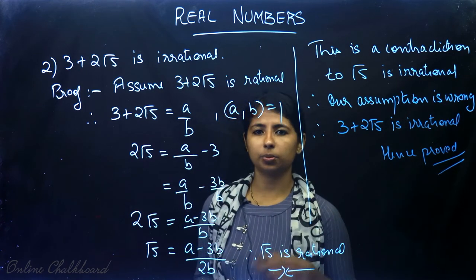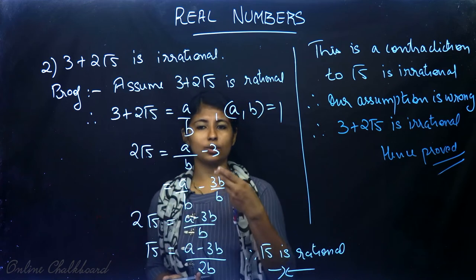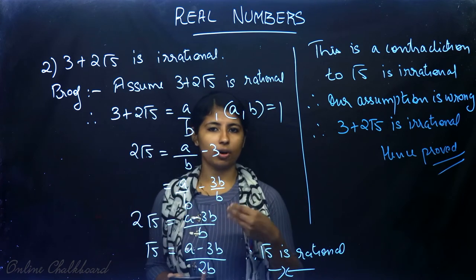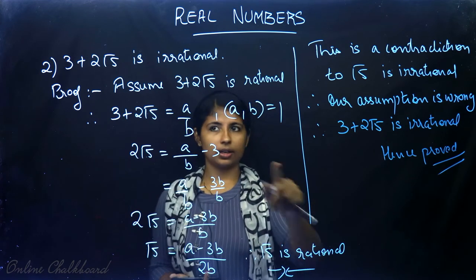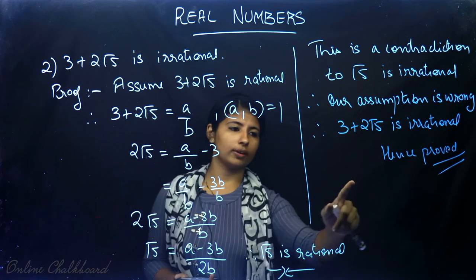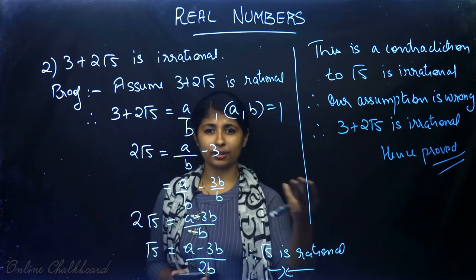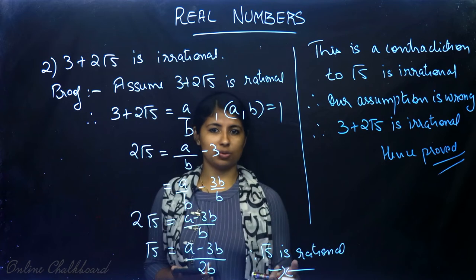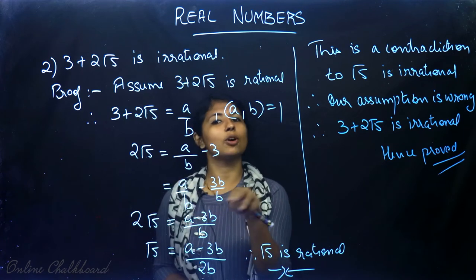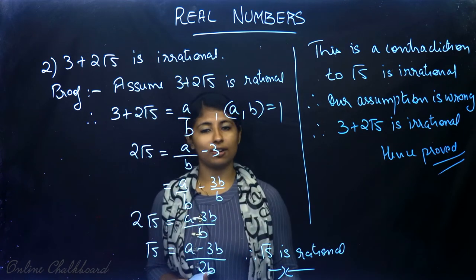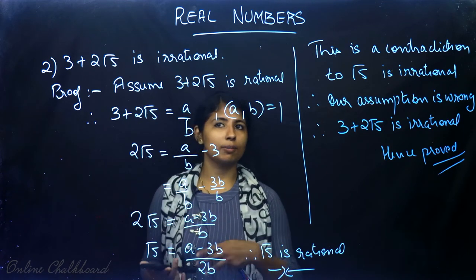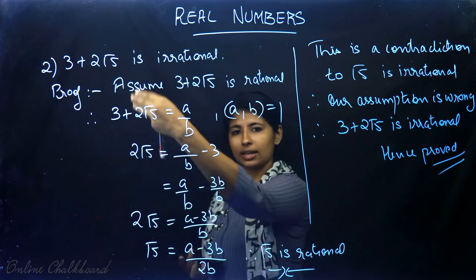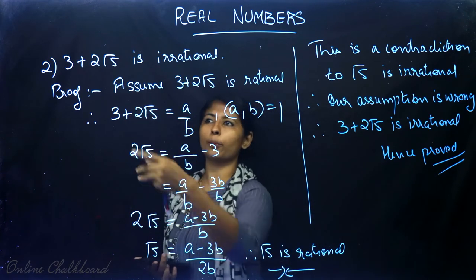This section is very easy when it comes to proving. We first take the irrational part — like √5 — to one side in the form a/b, then show it implies √5 is rational, arriving at a contradiction. You can also prove √5 is irrational separately by squaring both sides and showing a common divisor other than 1.